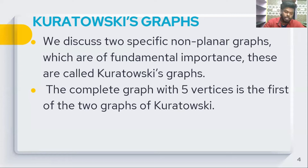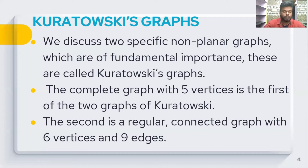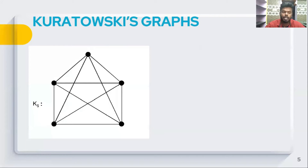K5 is a regular connected graph. The second Kuratowski graph is K3,3 — the complete bipartite graph with 3,3 vertices, six vertices total, and 9 edges.